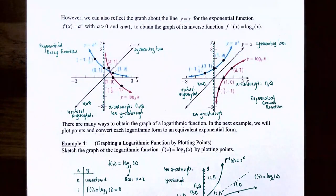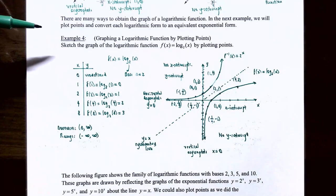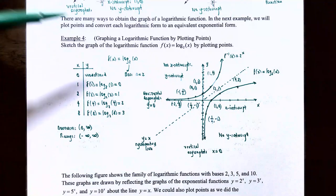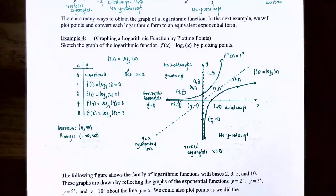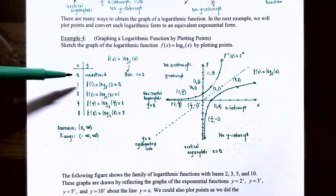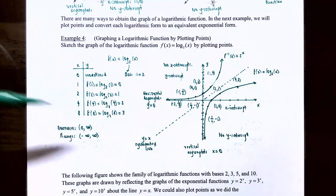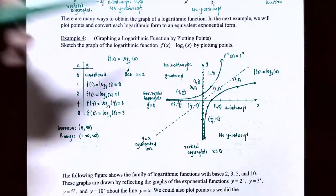There are many ways to obtain the graph of a logarithmic function. In the next example we're going to plot points and convert each logarithmic form to an equivalent exponential form. Example four: graphing a logarithmic function by plotting points. Sketch the graph of the logarithmic function f of x equals log base 2 of x by plotting points. We notice there is a vertical asymptote at x equals 0, the y-axis, and the graph doesn't exist on the left side. Let's choose x values: x equals 0, 1, 2, 4, and 8.